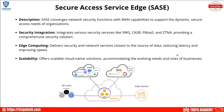SASE — Secure Access Service Edge — converges network security functions with WAN capabilities to support the dynamic secure access needs of organizations. It integrates various security services like secure web gateways, cloud access security brokers, and zero trust network architecture. SASE delivers security and network services closest to the source of data — at the actual edge — and offers scalable cloud-native solutions accommodating the evolving needs and sizes of businesses.